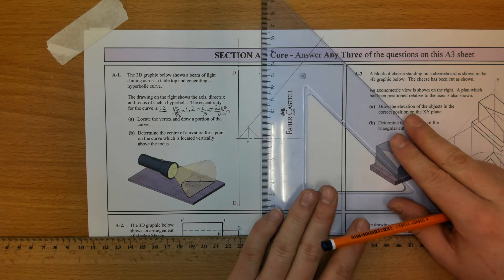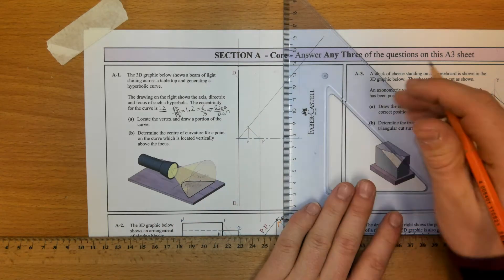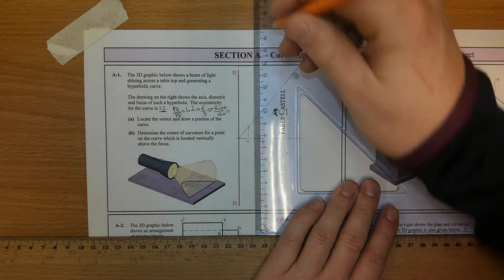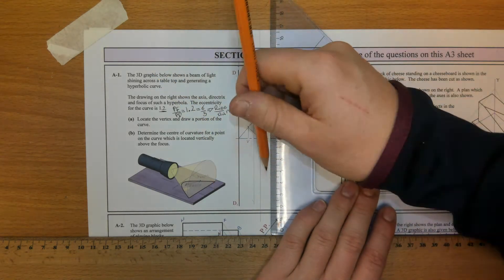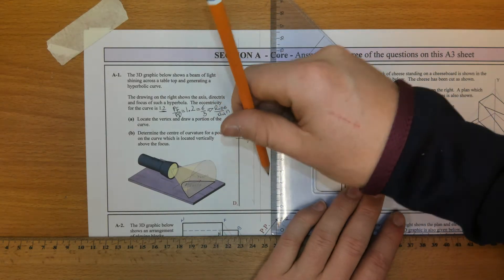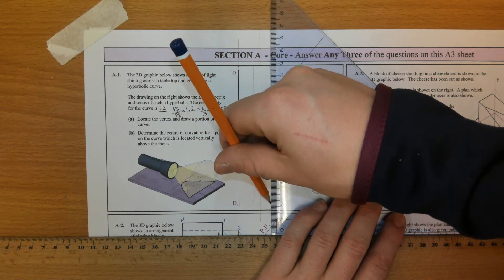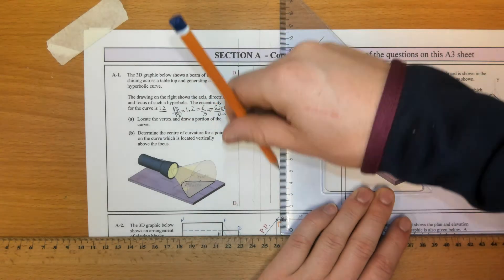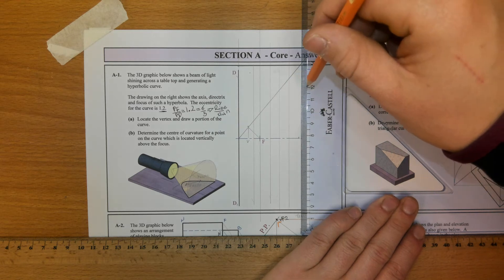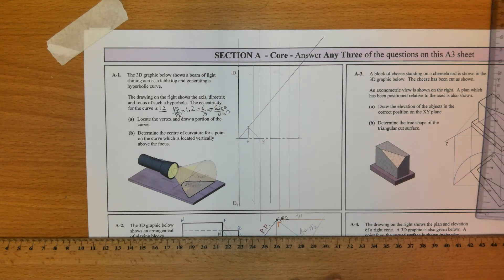Now, draw a portion of the curve. I'm going to draw lines called ordinates at any random distance through the major axis. They don't have to be any particular distance. So as far as there.